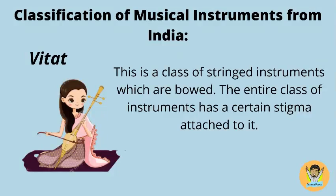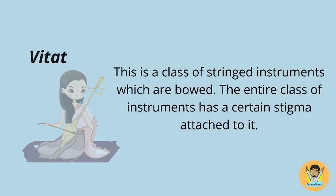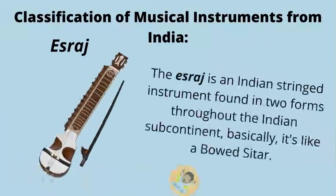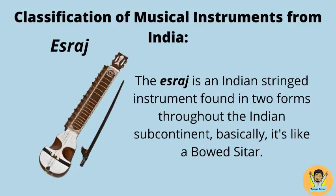Vitat is a class of stringed instruments which are bowed; the entire class of instruments has a certain stigma attached to it. The Banham — specifically the single-string Dodro Banham — comes from the Santal tribal community of Central India, particularly the modern state of Orissa, and is sometimes known as the Santali Banham. The Esrij is an Indian stringed instrument found in two forms throughout the Indian subcontinent; it is basically like a bowed sitar.